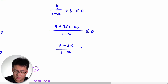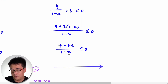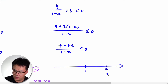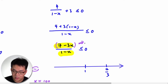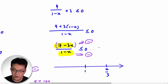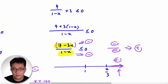Simplifying gives (7 minus 3x) over (1 minus x) less than or equal to 0. The root from the numerator is x = 7/3, and from the denominator x = 1. Now I'll use the test point method with a very large value — x equals one million. The numerator 7 minus 3,000,000 is negative, and the denominator 1 minus 1,000,000 is also negative. Negative over negative is positive, so the rightmost region is positive.